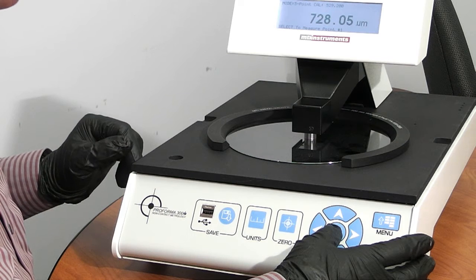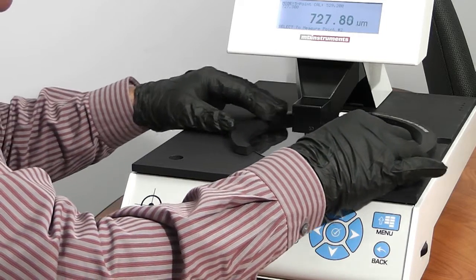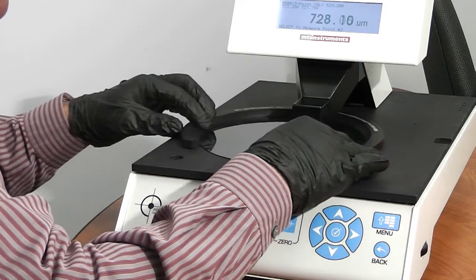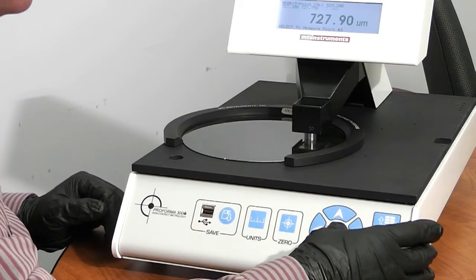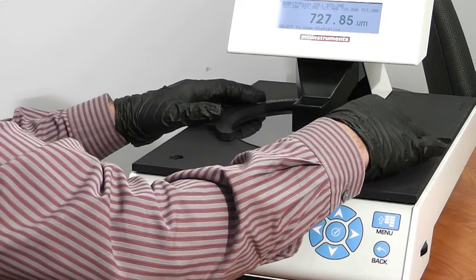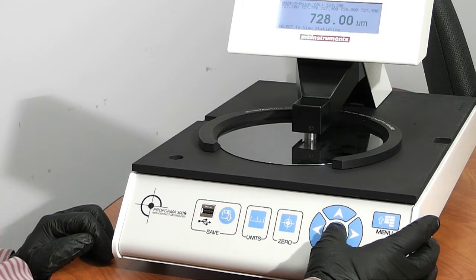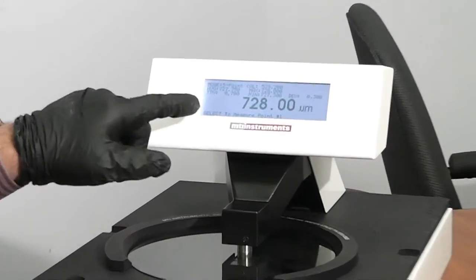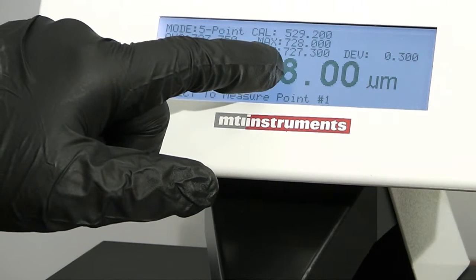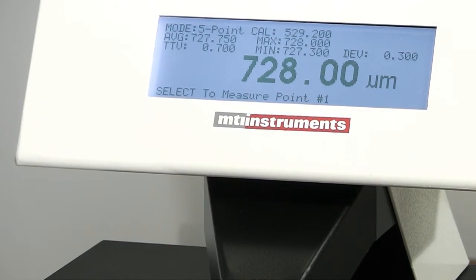So I'm on the first point right now, so we just hit select to measure it. All right, now we're going to go to point two. Let's go over here. Now we go to point three, which is over here. Point four. Make it down there. Okay, next we select to view statistics. So we can see our total thickness variation was .7 microns. We see our minimum, 727, and we also have our maximum, which is 728. Deviation was, standard deviation is .3 microns.